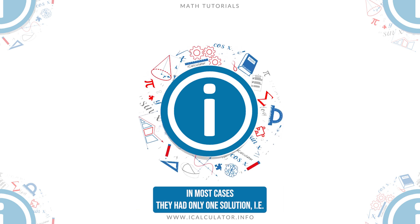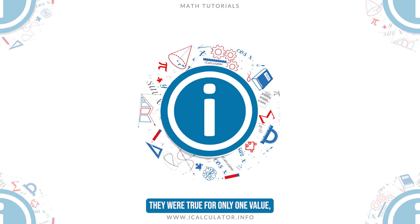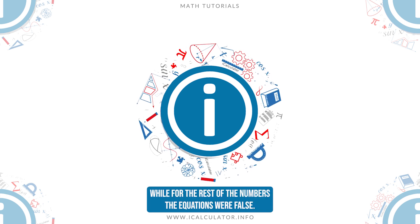In most cases, they had only one solution. That is, they were true for only one value, while for the rest of the numbers the equations were false.